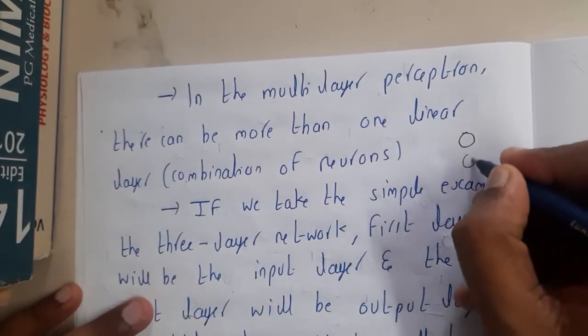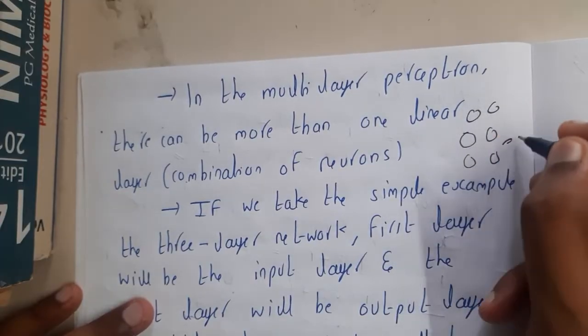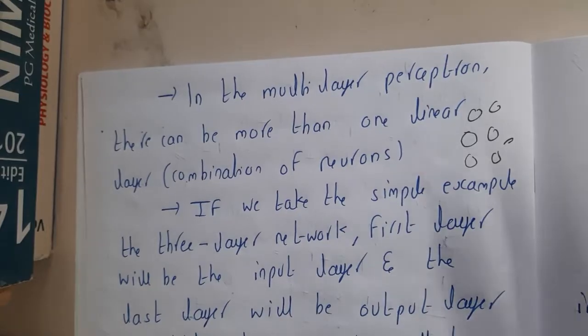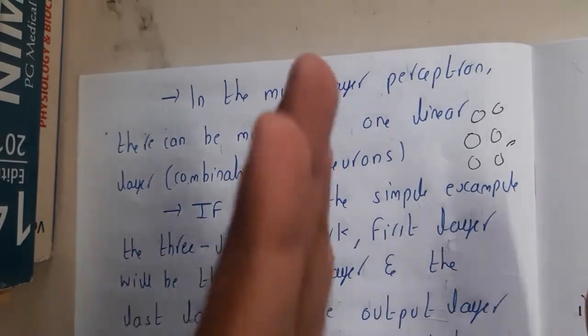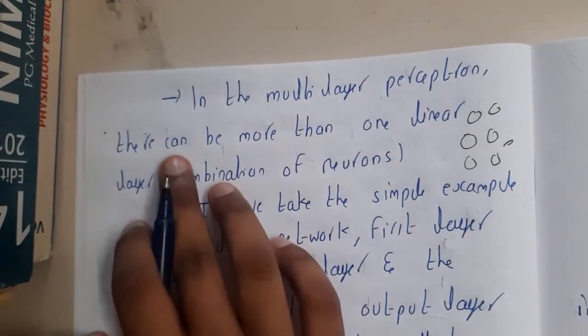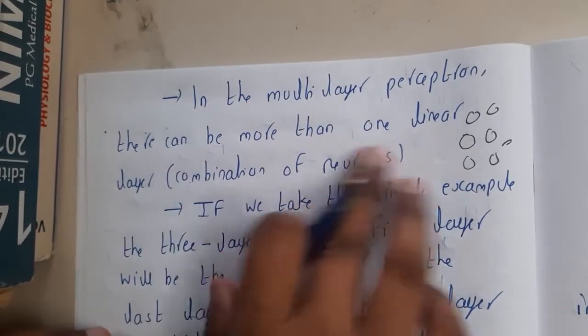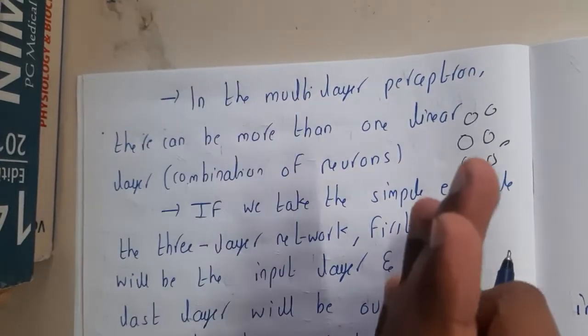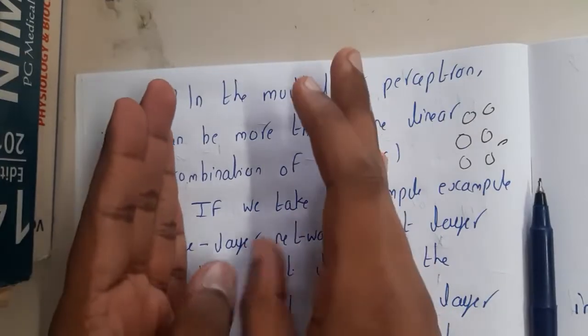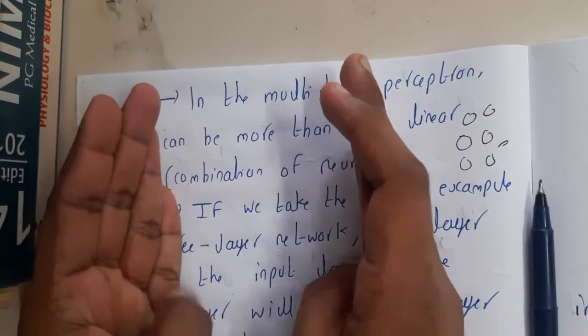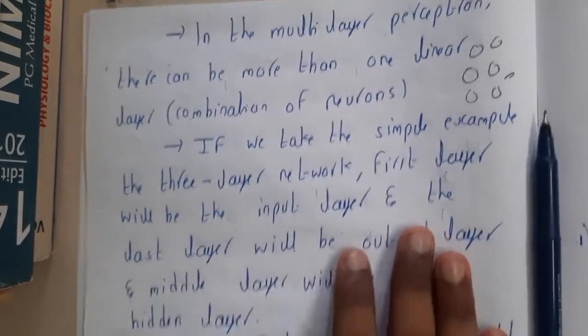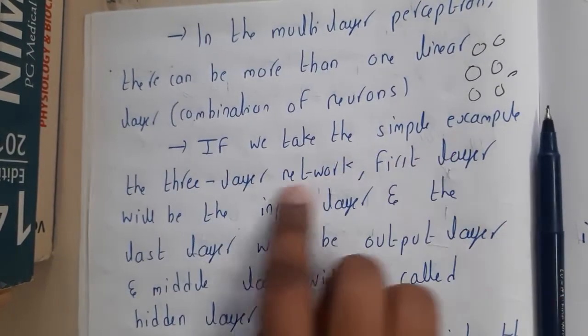Everyone remembers we discussed about perceptron. Perceptron is a single unit, so if you combine these units to perform some task, that is our neural network or multi-layer perceptron. Multiple layers of perceptrons are placed. In the multi-layer perceptron, there can be more than one linear layer. There will not be a single layer; there will be multiple layers - one input layer, one output layer, and in between there can be thousands of layers.